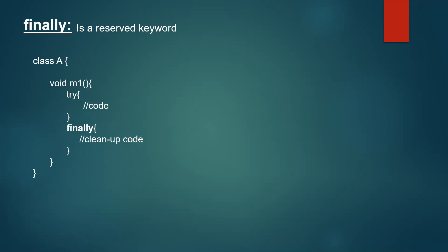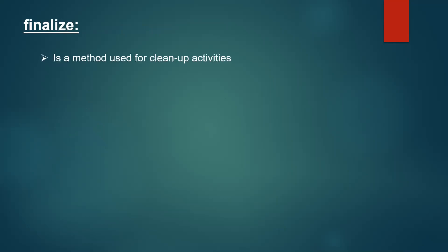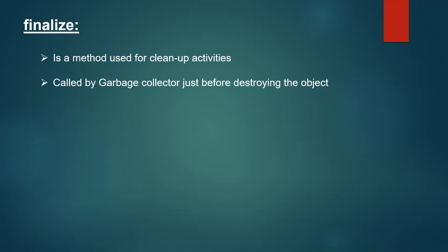This is all about the finally keyword. Next, finalize. Unlike final and finally, finalize is not a keyword but it's a method used for cleanup activities. This method is called by the garbage collector, which destroys objects that are not in use just to free up space. The finalize method will be called by the garbage collector just before destroying the objects.